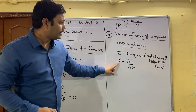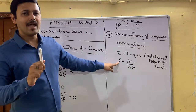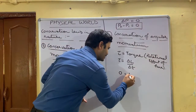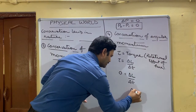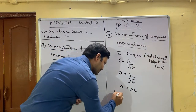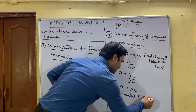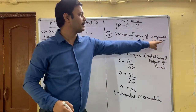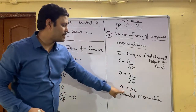If the total torque acting on the body becomes 0, then tau equals delta L upon delta T equals 0, which means delta L becomes 0. Here, L is the angular momentum. This means conservation of angular momentum: when torque tau becomes 0, delta L becomes 0.